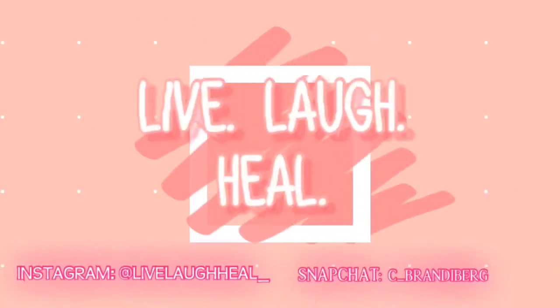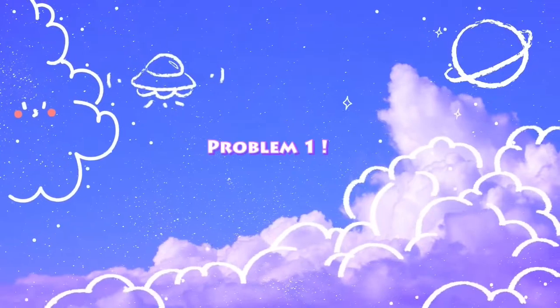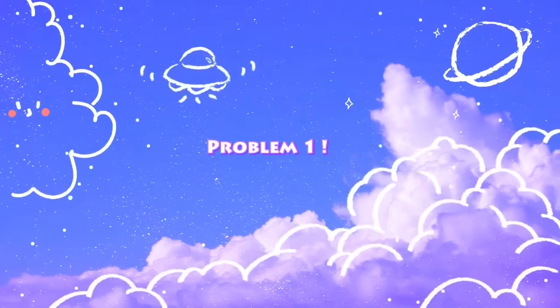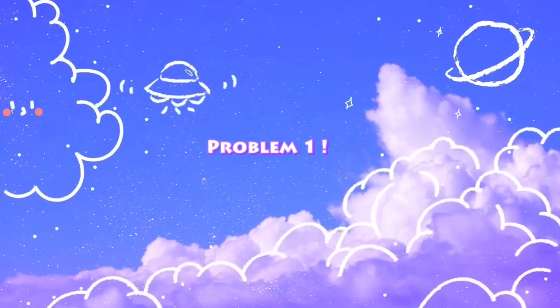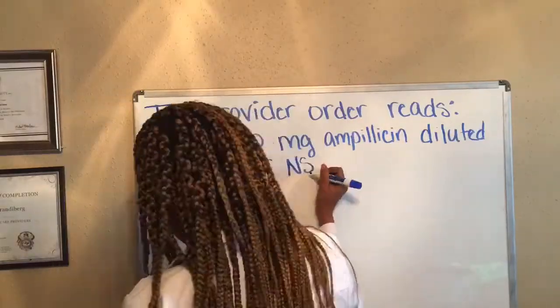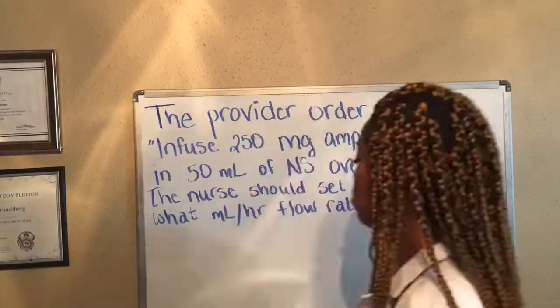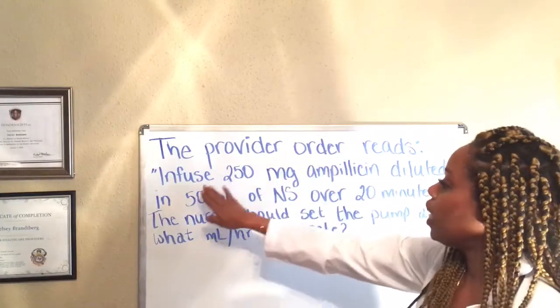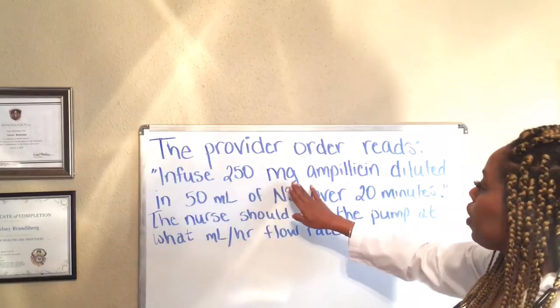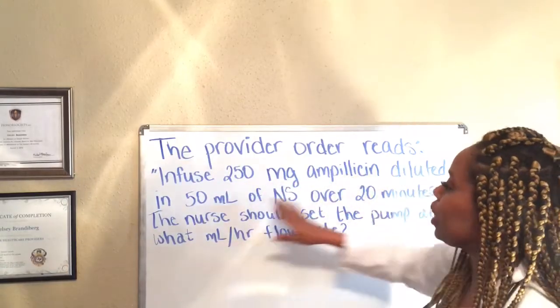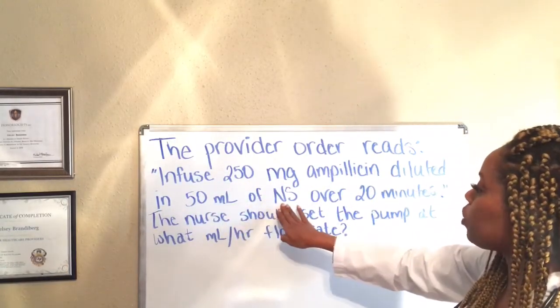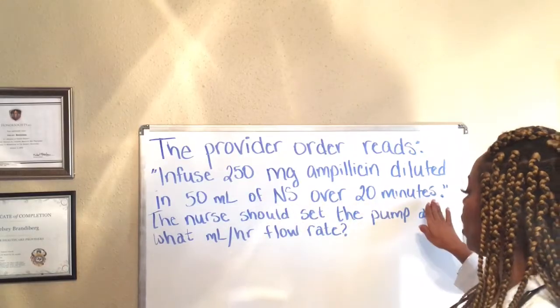Stay tuned if you want to see how dosage calc is made easy. The provider order reads: infuse 250 milligrams of ampicillin diluted in 50 milliliters of normal saline over 20 minutes.